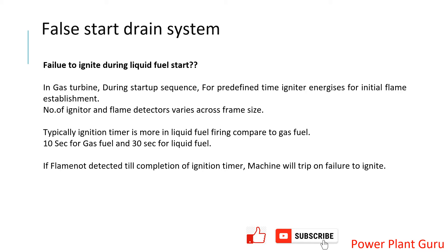In the gas turbine startup sequence, we understand there are certain numbers of igniters and flame detectors, which may differ for different machines. Once you start the process, there is introduction of fuel into the machine and then spark plugs ignite the fuel and air mixture. The ignition timer may be different for different fuels — 10 seconds for gas and 30 seconds for liquid fuel. If there is no sustainable or stable flame after this period, the machine does not detect that it is progressing on the startup sequence and will trip on failure to ignite.